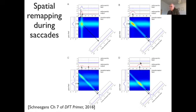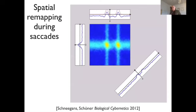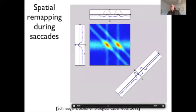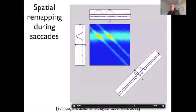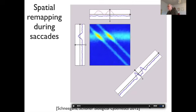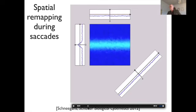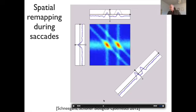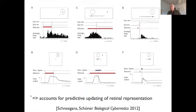Here is a computer simulation of just that: you have the induced field, a body-centered representation, then a gaze shift, and the prediction arises at the new retinal location while the lower-level body-centered representation remains invariant along the horizontal axis. This prediction actually happens in biology.